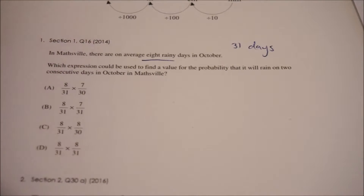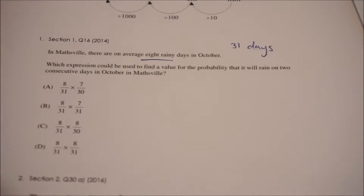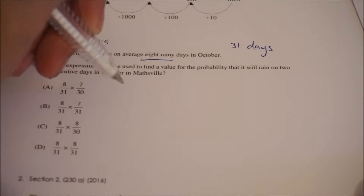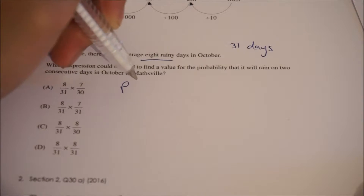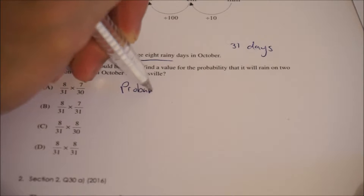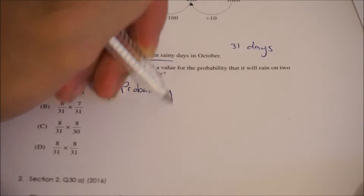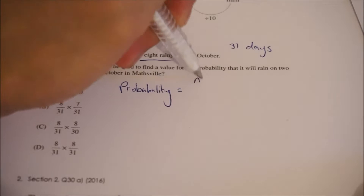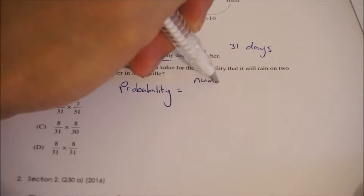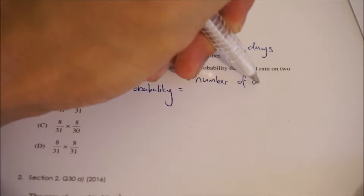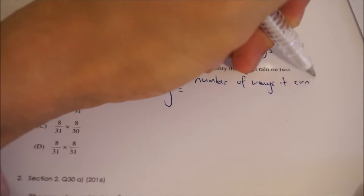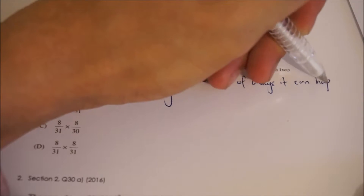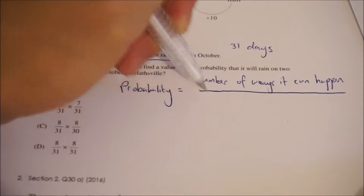The idea behind this is I want to use the fact that the probability of something happening equals the number of ways it can happen divided by the total possible outcomes.